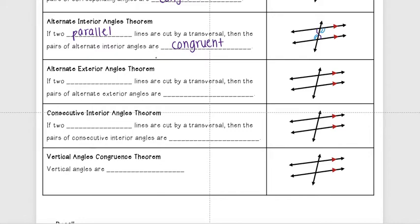The Alternate Exterior Angles Theorem says if two parallel lines are cut by a transversal, then the pairs of alternate exterior angles are — you guessed it — congruent. So that angle is congruent with that angle, and this angle is congruent with this angle.